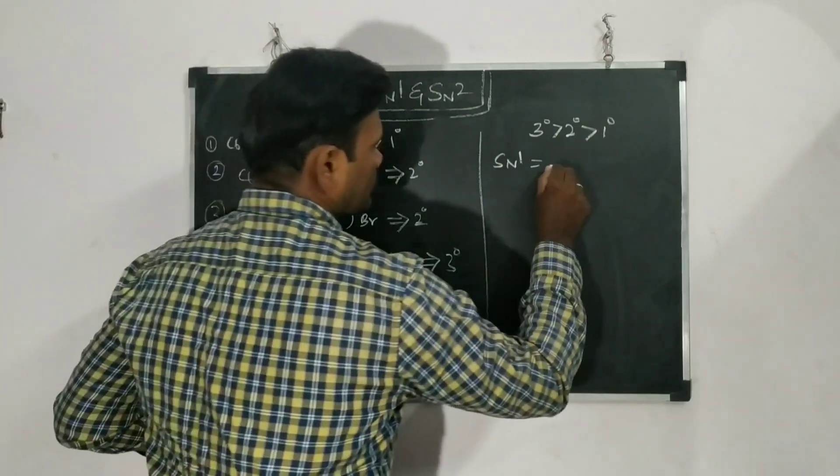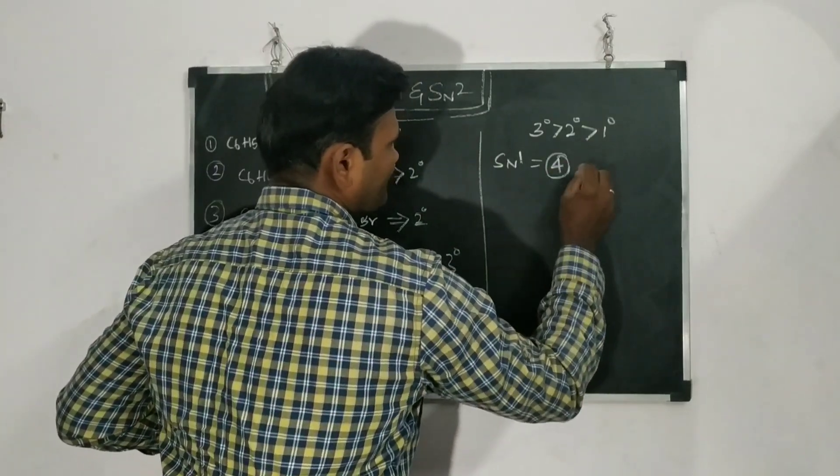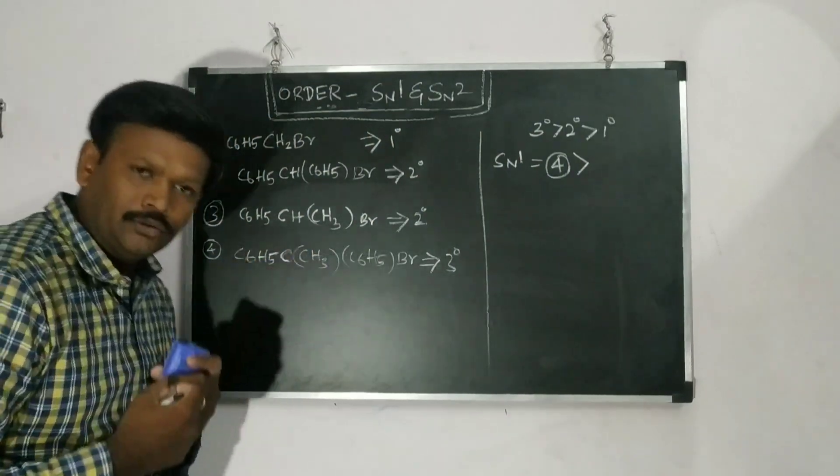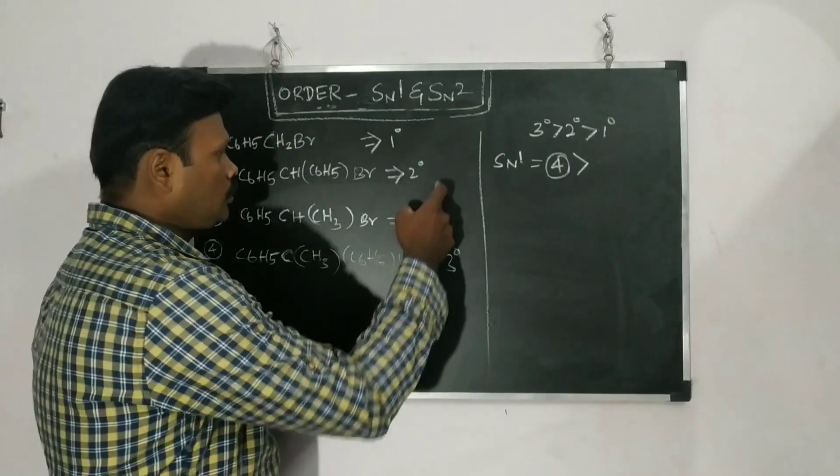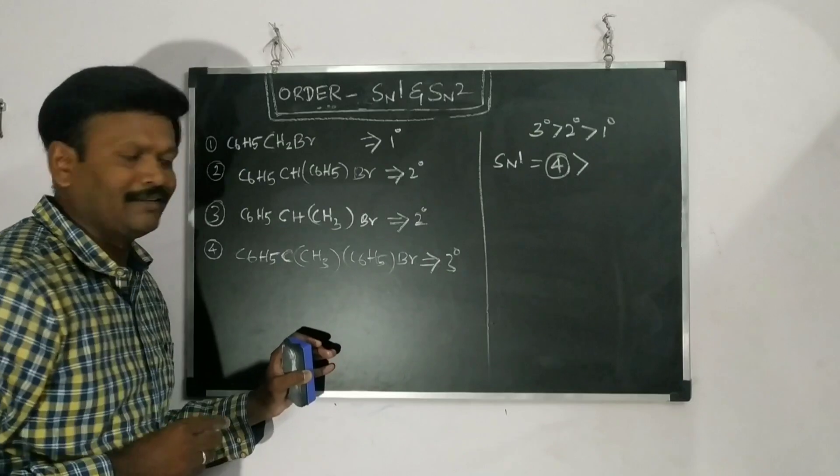So if the compound four. Four will be very fast. And then what about the 2 degree? 2 degree, two different 2 degree components are there.